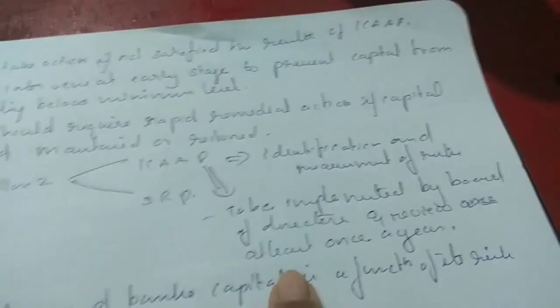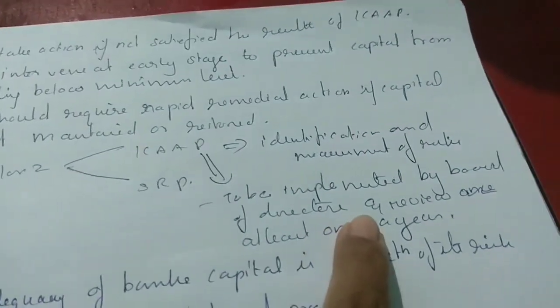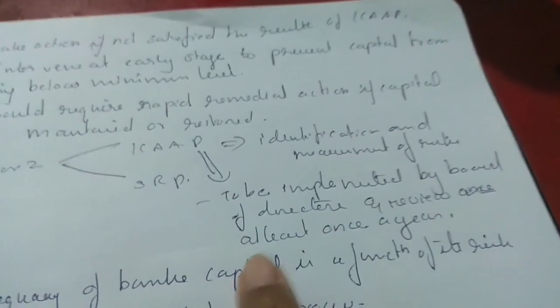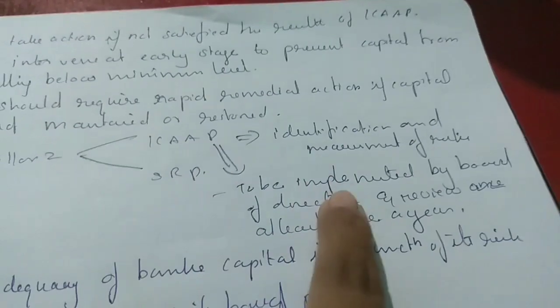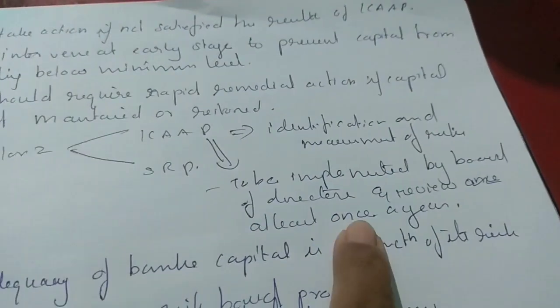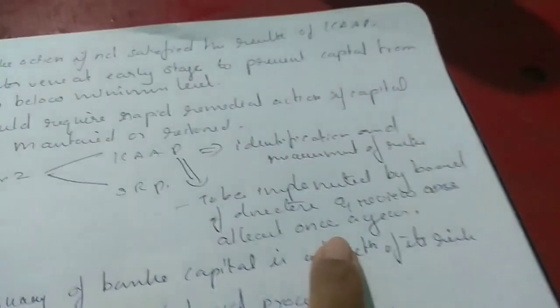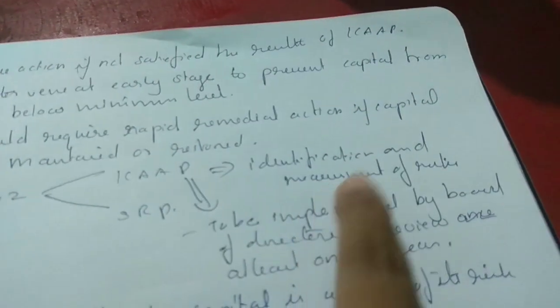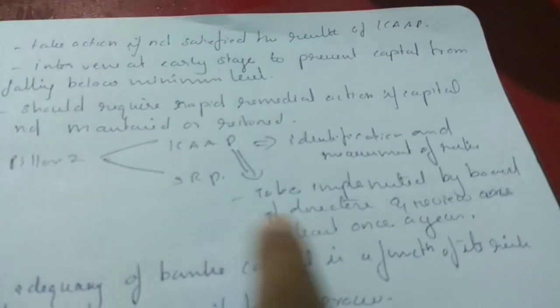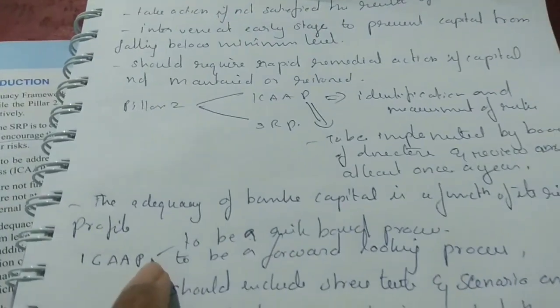ICAP is for identification and measurement of risk. It must be implemented by the Board of Directors of the bank and reviewed at least once a year. This ICAP is reviewed by the SRP — the Supervisory Review Process.